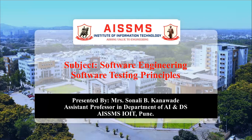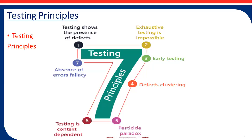Software testing principles have been suggested over the past 50 years and offer general guidelines common for all testings. These are the 7 software testing principles: first is testing shows the presence of defects, second is exhaustive testing is impossible, third is early testing, fourth is defect clustering, fifth is pesticide paradox, sixth is testing is context dependent, and last is absence of error fallacy.